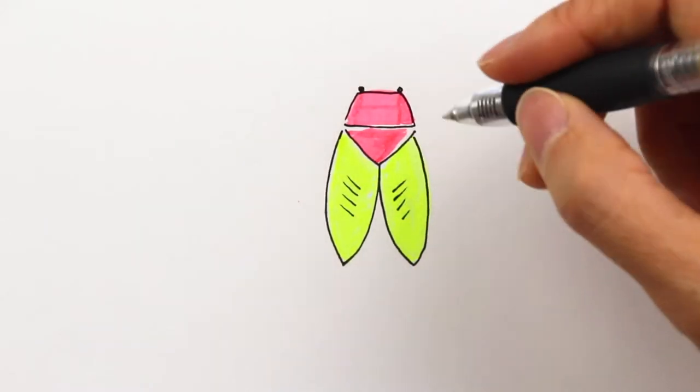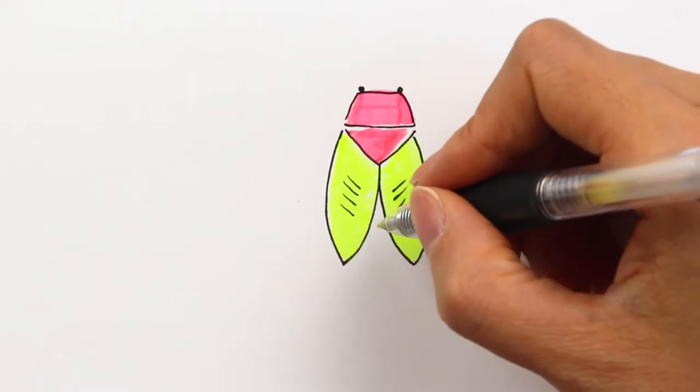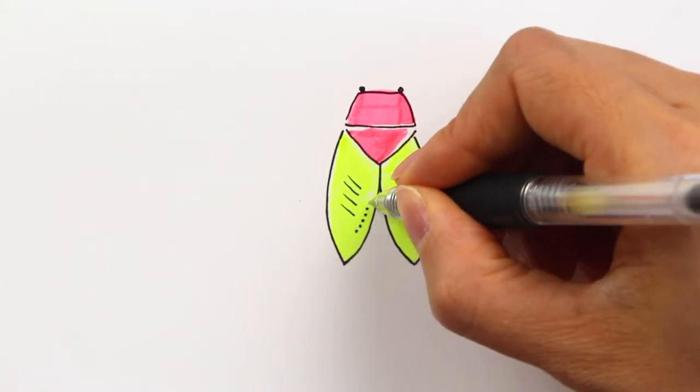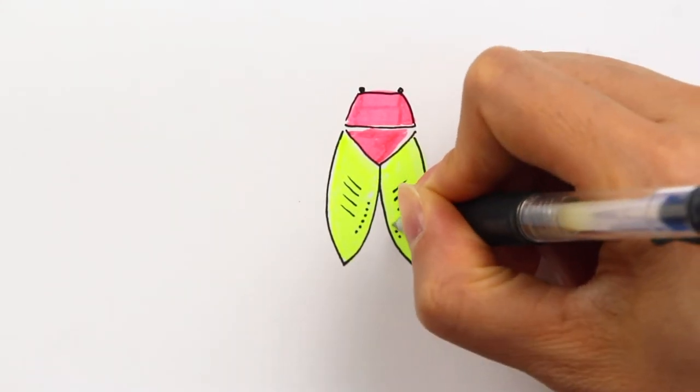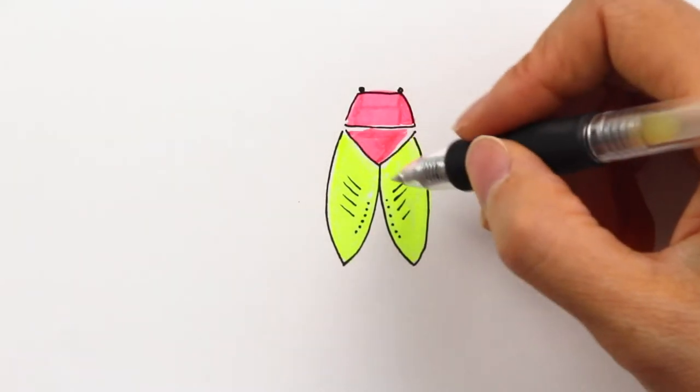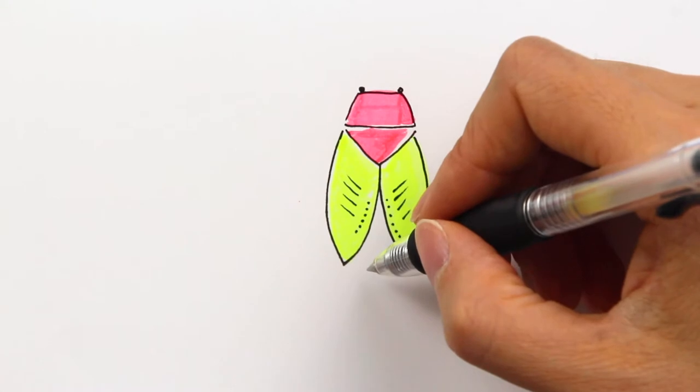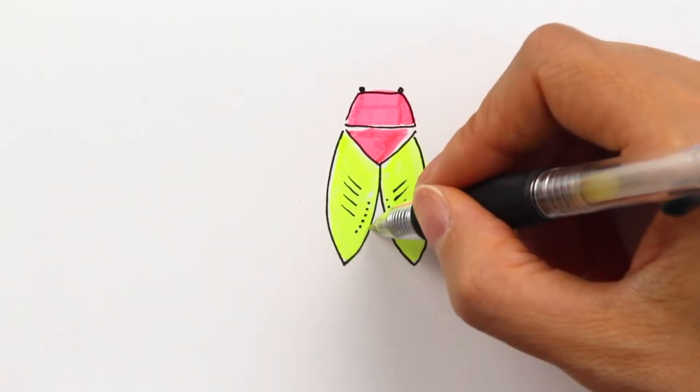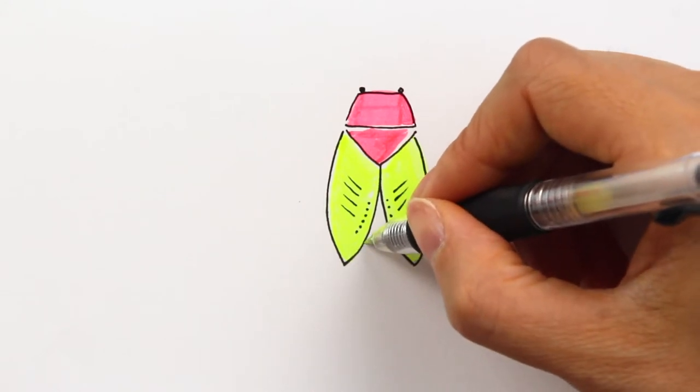I'm also going to add some dots along the way just to give it a little pattern. We're almost there. Now we have to finish the body part. The body is a little smaller but it also looks like this kind of pointing shape.